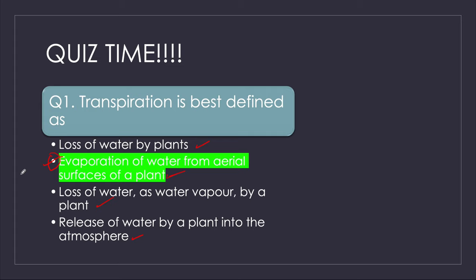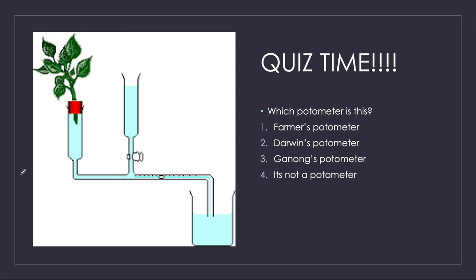Now the second question is a random question — very easy if you paid attention. Which potometer is this? Is it the farmer's potometer, Darwin's potometer, the Ganon's potometer, or not a potometer at all? You can eliminate at least one option right away. Let's see if you get it right.